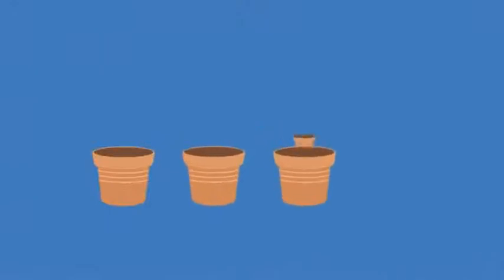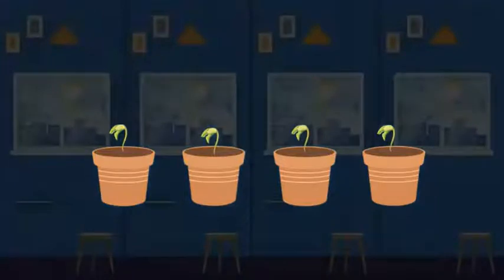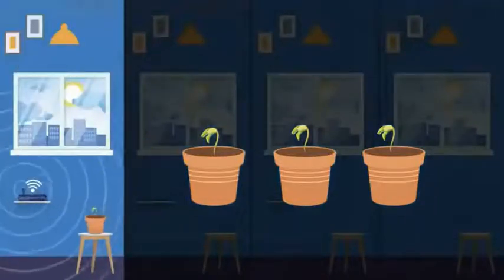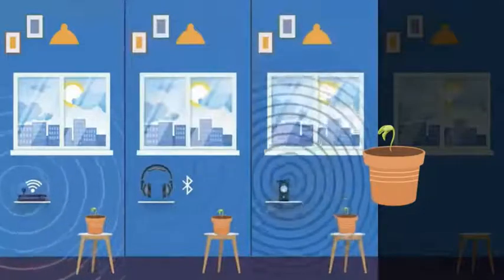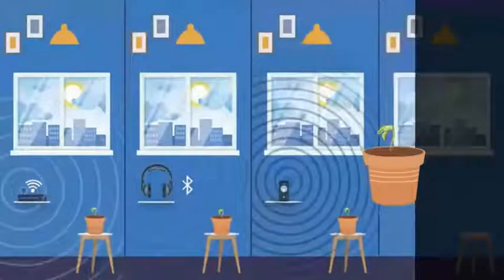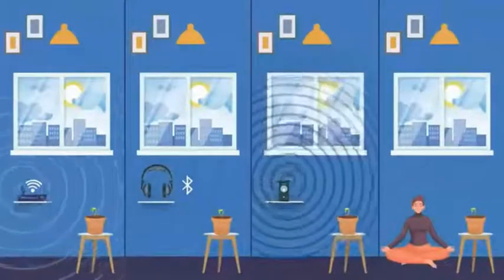Let us look at another experiment. Sprouts were planted in four separate pods, and they were exposed to the same conditions, except one was kept in a room with Wi-Fi, another in a room with Bluetooth, the third in a room with an active mobile phone connection, and the last one in a meditation room that had no radiation.